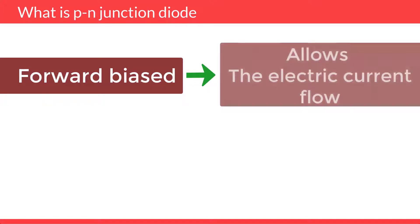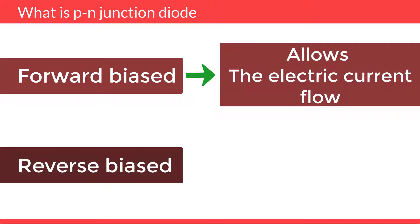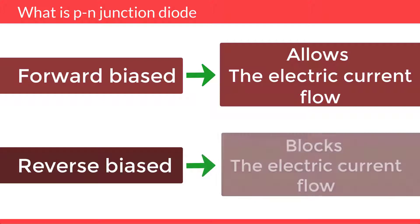If the diode is forward biased, it allows electric current flow. On the other hand, if the diode is reverse biased, it blocks the electric current flow.